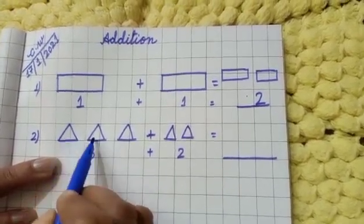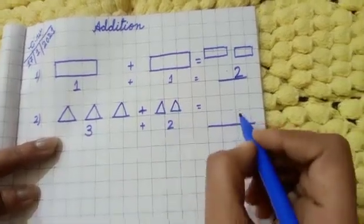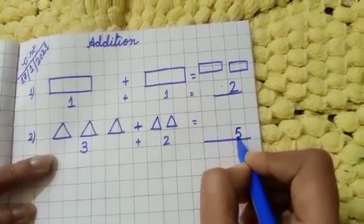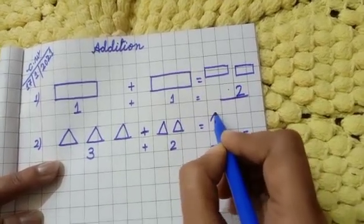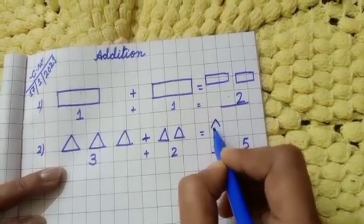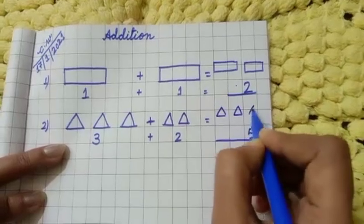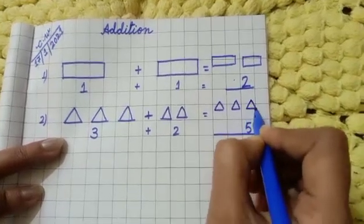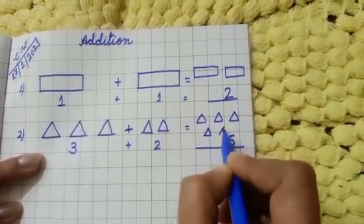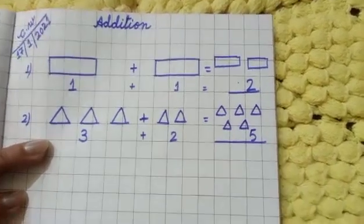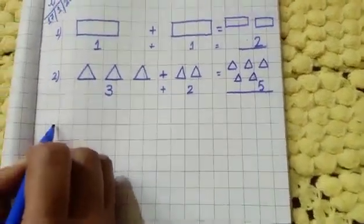Now you count: one, two, three, four, five. So first you write the number five, and then you draw five triangles here — one, two, three, four, five. Now next is number three.